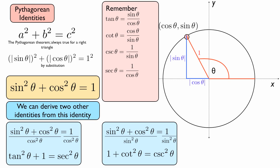Again, all we did was divide each of the terms by sine squared theta. So sine squared theta divided by sine squared theta is 1. Cosine squared theta divided by sine squared theta is cotangent squared theta. And 1 divided by sine squared theta is equal to cosecant squared theta.